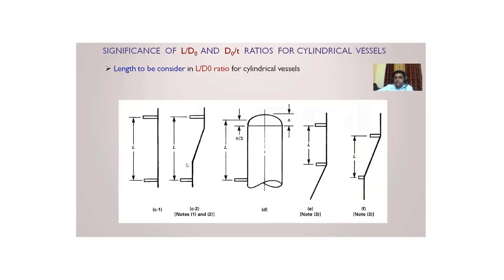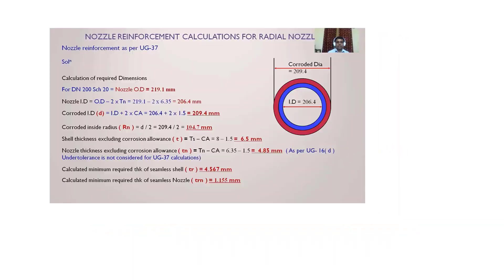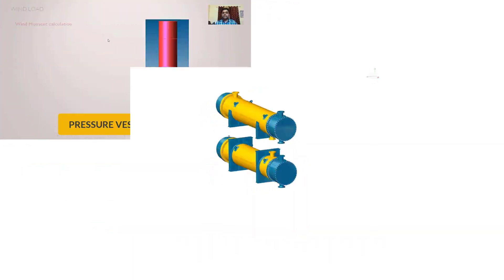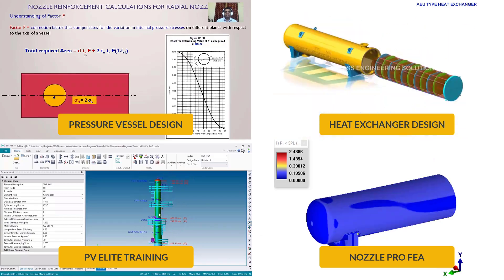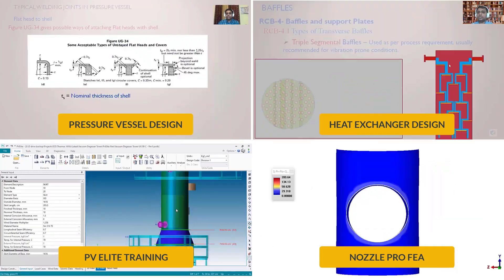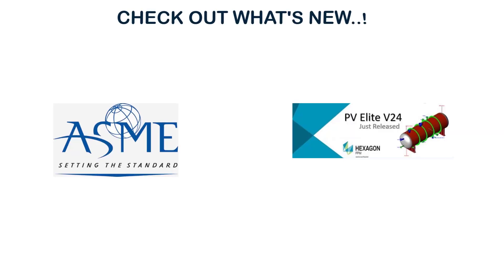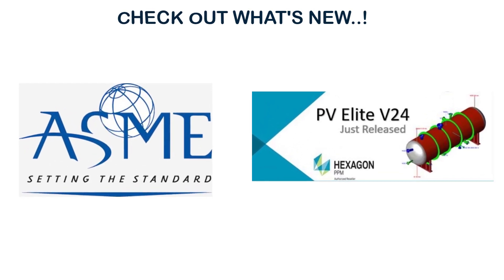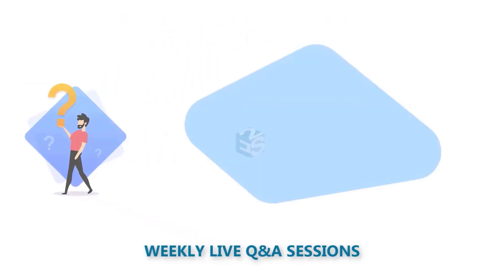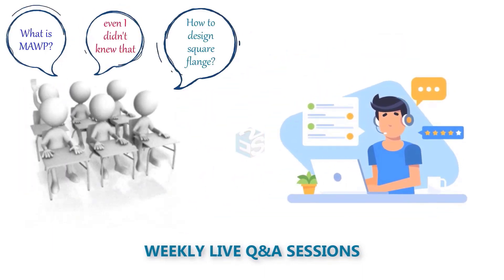Select from a wide range of courses like pressure vessel design, heat exchanger design, PV Elite software training, and FEA using NozzlePro software. Understand the latest changes in the ASME code 2021 and PV Elite PV24. Get answers to your doubts in weekly live Q&A sessions.